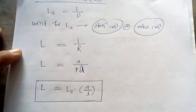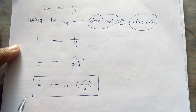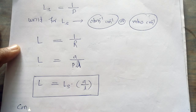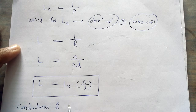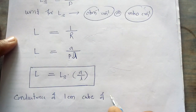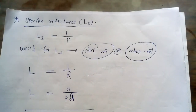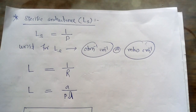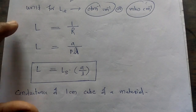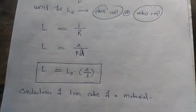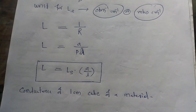We can now define specific conductance. Specific conductance is the conductance of 1 cm³ of a material. Whenever the conductance is given for 1 cm³, that conductance is called the specific conductance. We specify a particular dimension of a material — 1 cm³ — and that is why this conductance is called the specific conductance of a particular material or conductor.